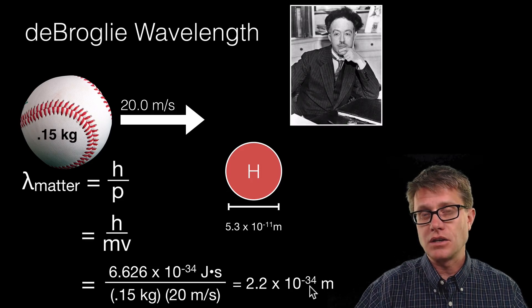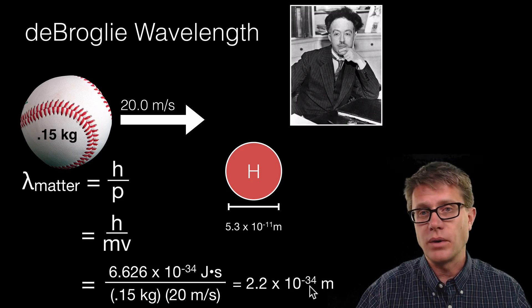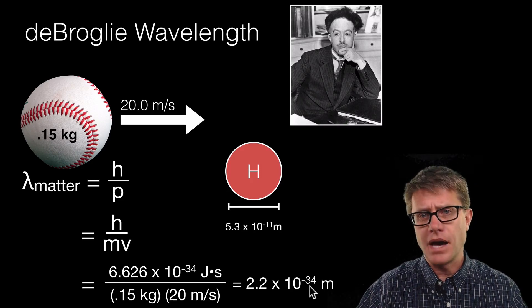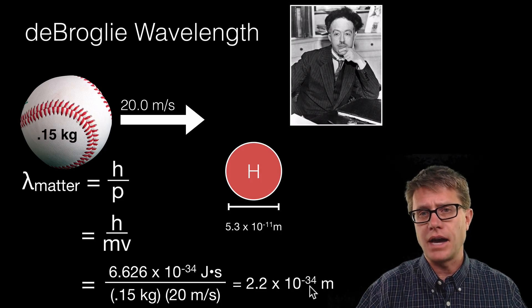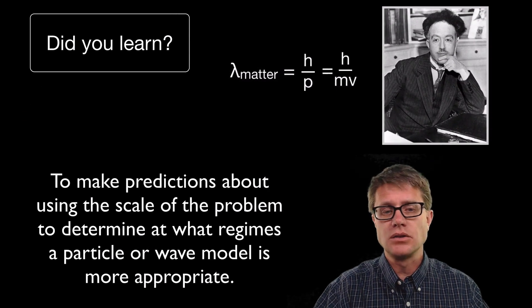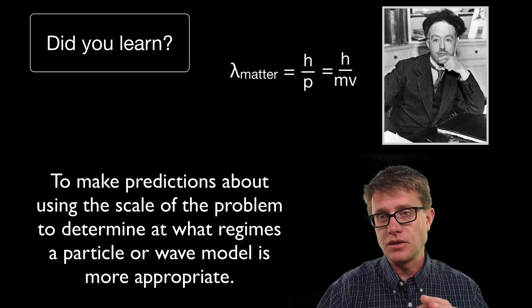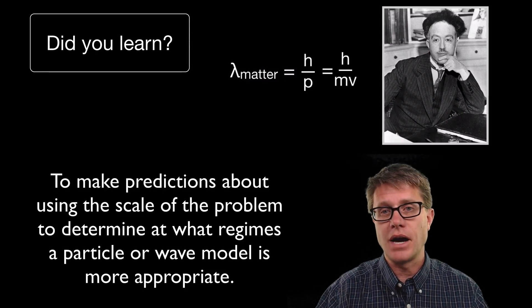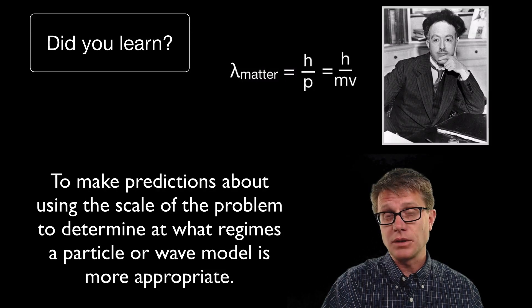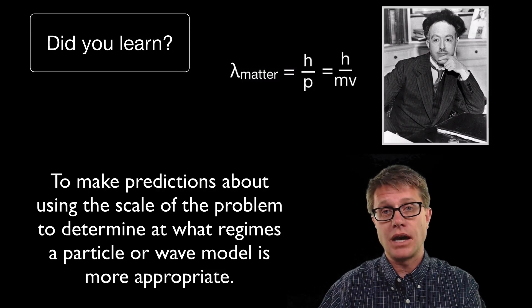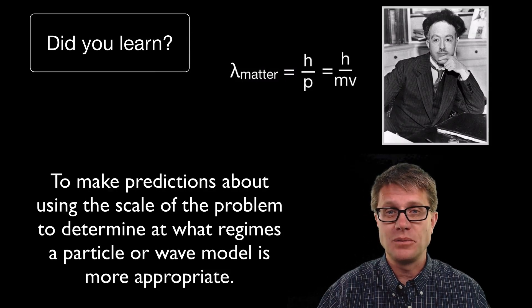In the next video I am going to start to apply de Broglie wavelength to smaller matter. And you will find that the wavelength actually becomes important. And so did you learn to make predictions about using the sense of scale to determine if matter is a particle in classical mechanics or a wave in quantum mechanics? I hope so. And I hope that was helpful.